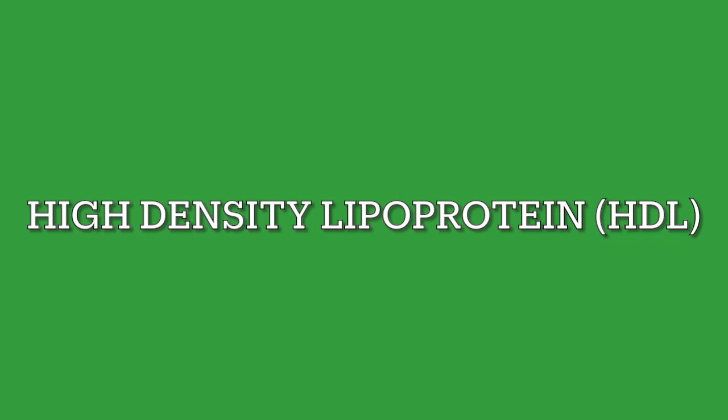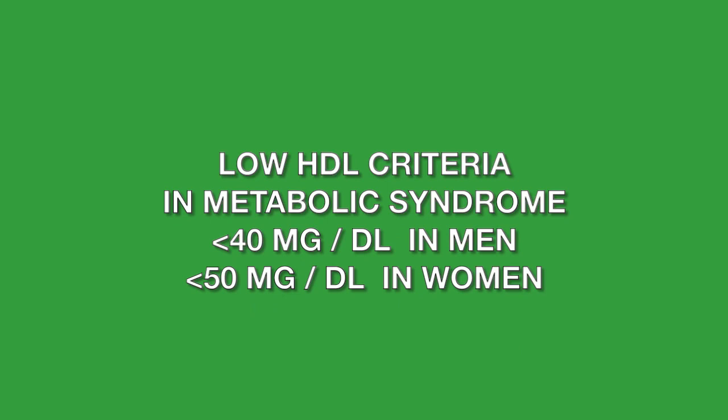The next criterion involves high-density lipoproteins. Briefly, a lipoprotein is a combination of triglyceride, cholesterol, and protein. There are different types — HDL, LDL, and VLDL. HDL is called the 'good cholesterol,' and when HDL is low — less than 40 in men and less than 50 in women — that is also one of the criteria for metabolic syndrome.